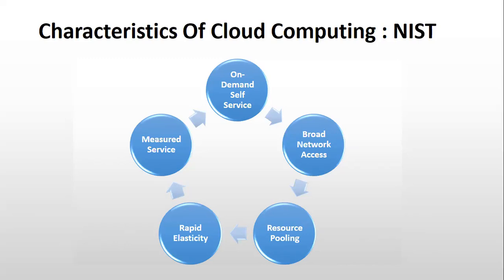Broad network access means there is no dependency on a physical location — you can access cloud solutions from anywhere. Resource pooling means the cloud is full of resources you can pull as you need and release once you no longer require them.